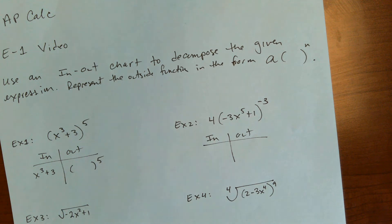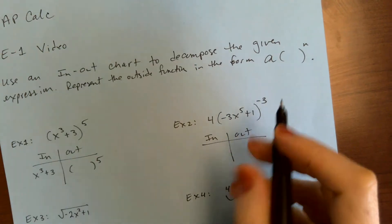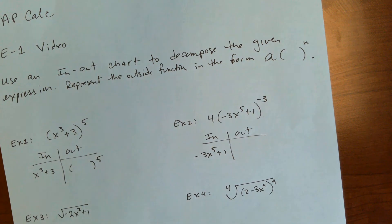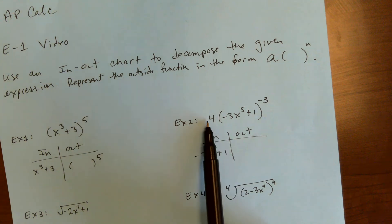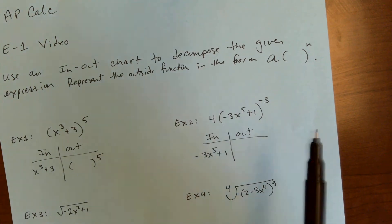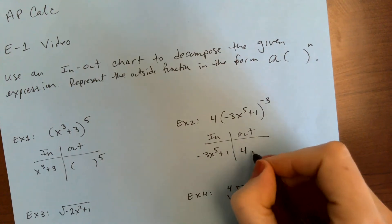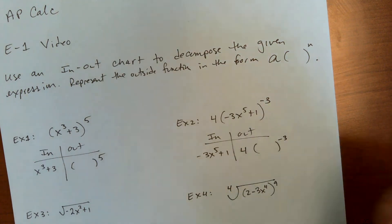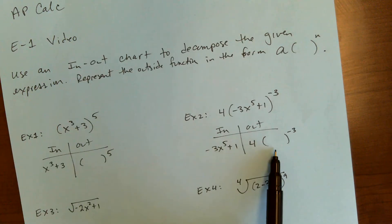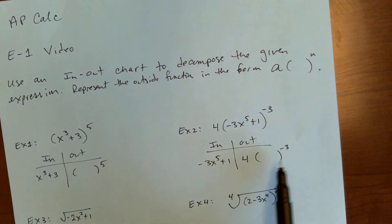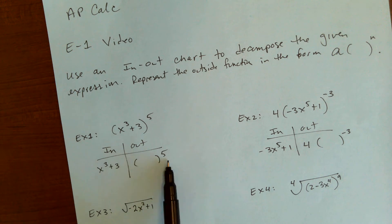So what is the inside function? Remember, very often it's going to be inside parentheses or under a radical. So the inside is negative three x to the fifth plus one, because that's what's inside the parentheses. Now for the outside function, you just rewrite the whole thing but remove the inside. So four blank to the negative three. Both of these outsides are of the form A-blank to the N.